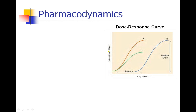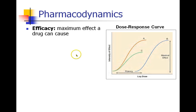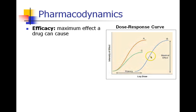In a dose-response curve, we have efficacy. Efficacy is the maximum effect a drug can cause — no matter how much you give, you won't get more effect than that. The efficacy is this line here for drugs A and B, and it's a lower effect for drug C.